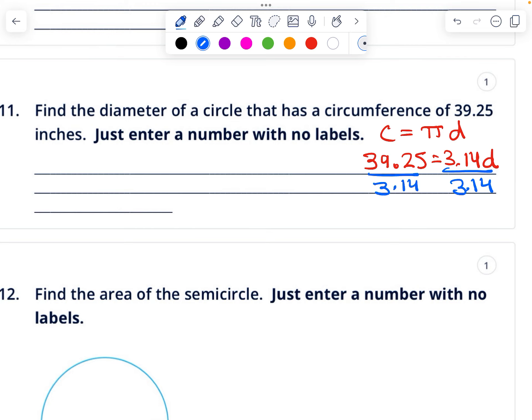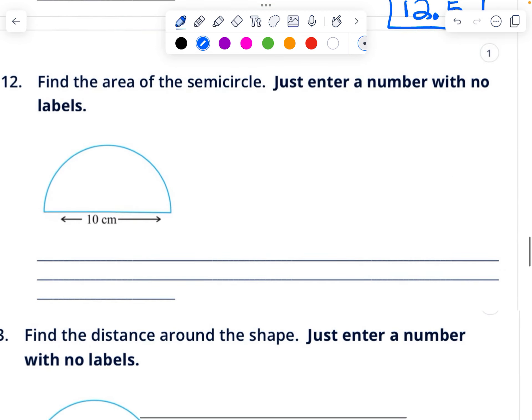Find the area of the semicircle. So if 10 is the diameter, the radius is 5. And I know that the area of a circle is pi r squared, so the area of half of a circle is half of pi r squared. So in my calculator I'll put 0.5 for half, 3.14 for pi, and 5 for radius. So I'll do 0.5 times 3.14 times 5 times 5, which is 39.25.